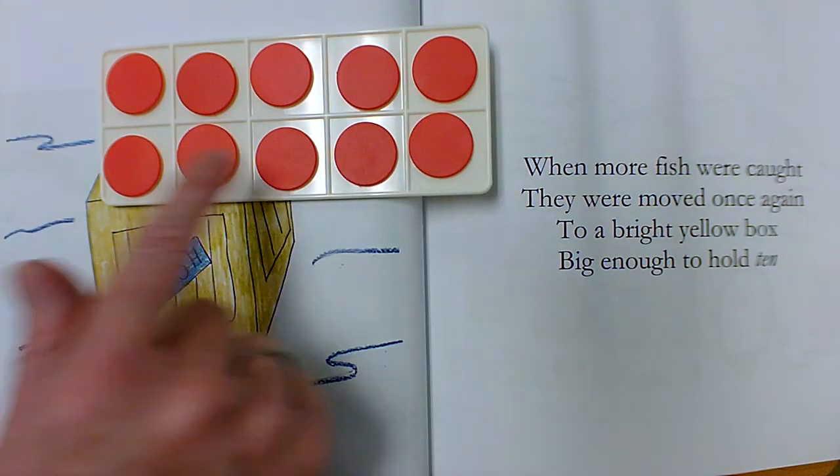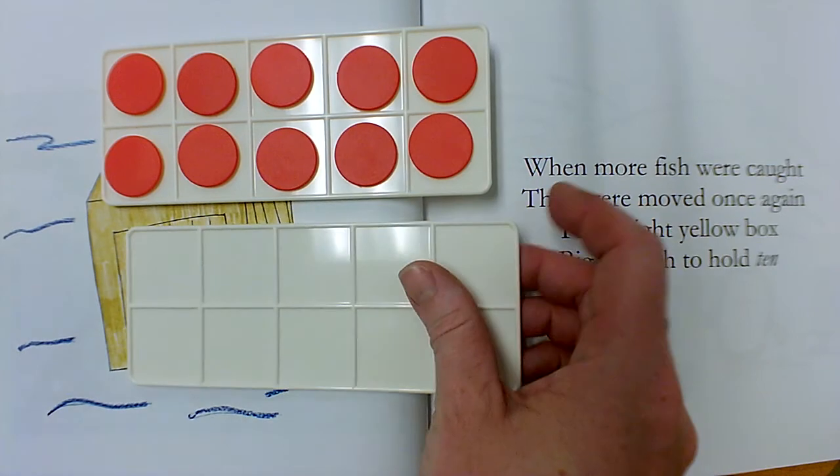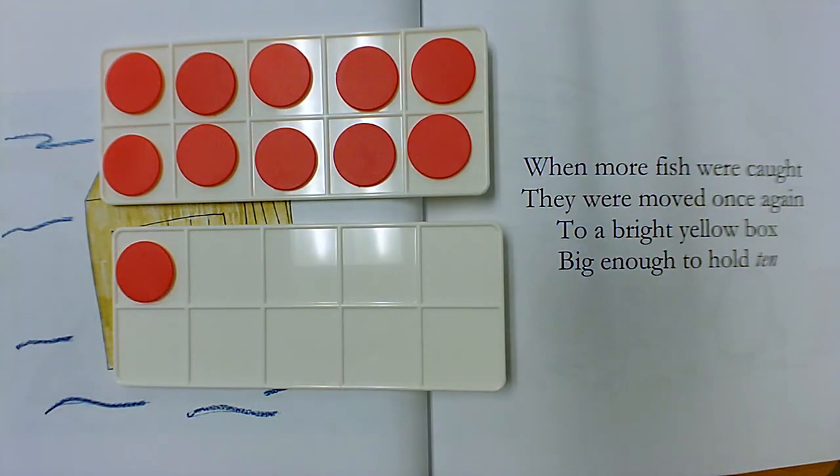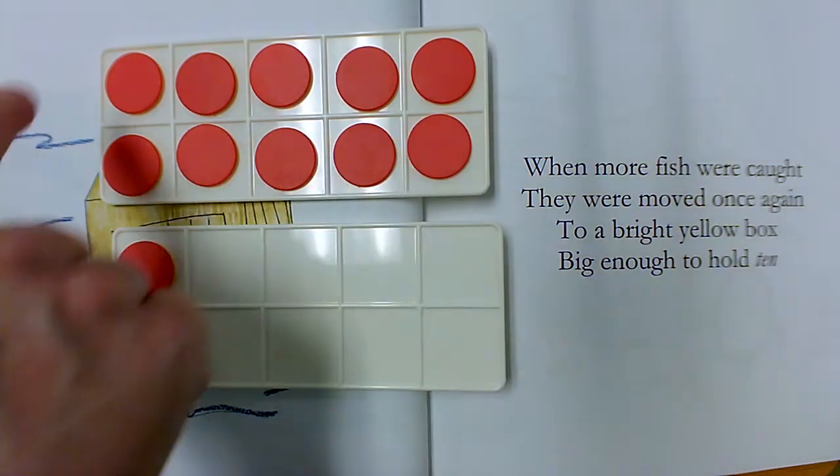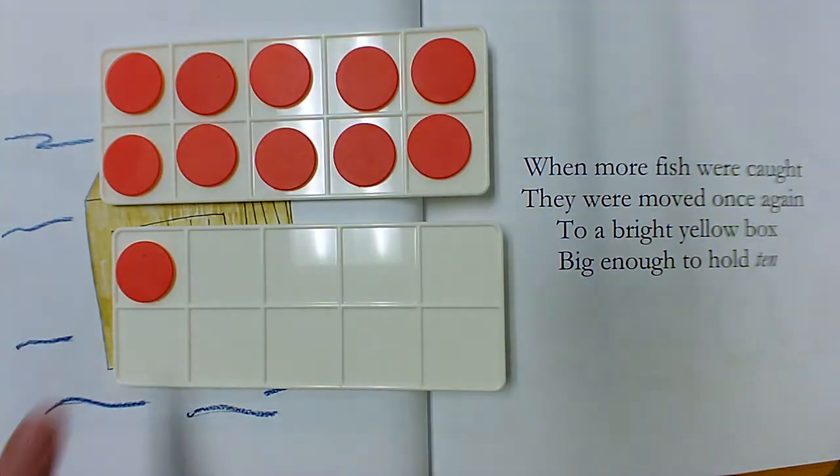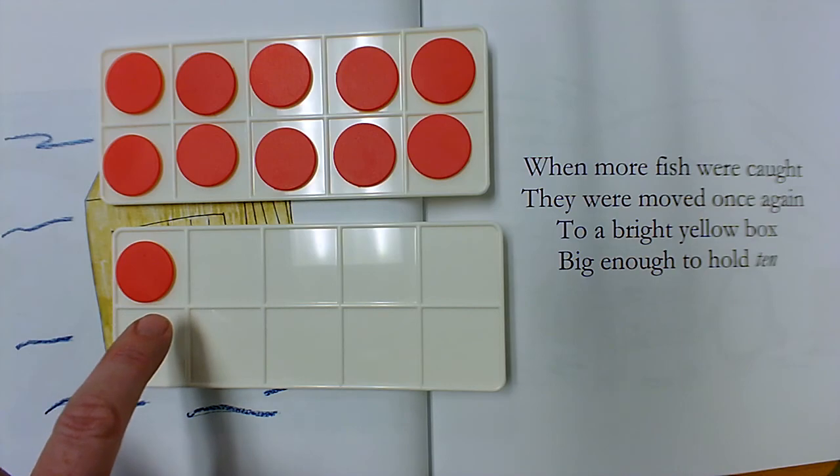This one is not full, so those are my extra ones. So here we are with a full 10 frame. So I can just say 10. This one I have to count by ones, because it's not full. I count by ones.